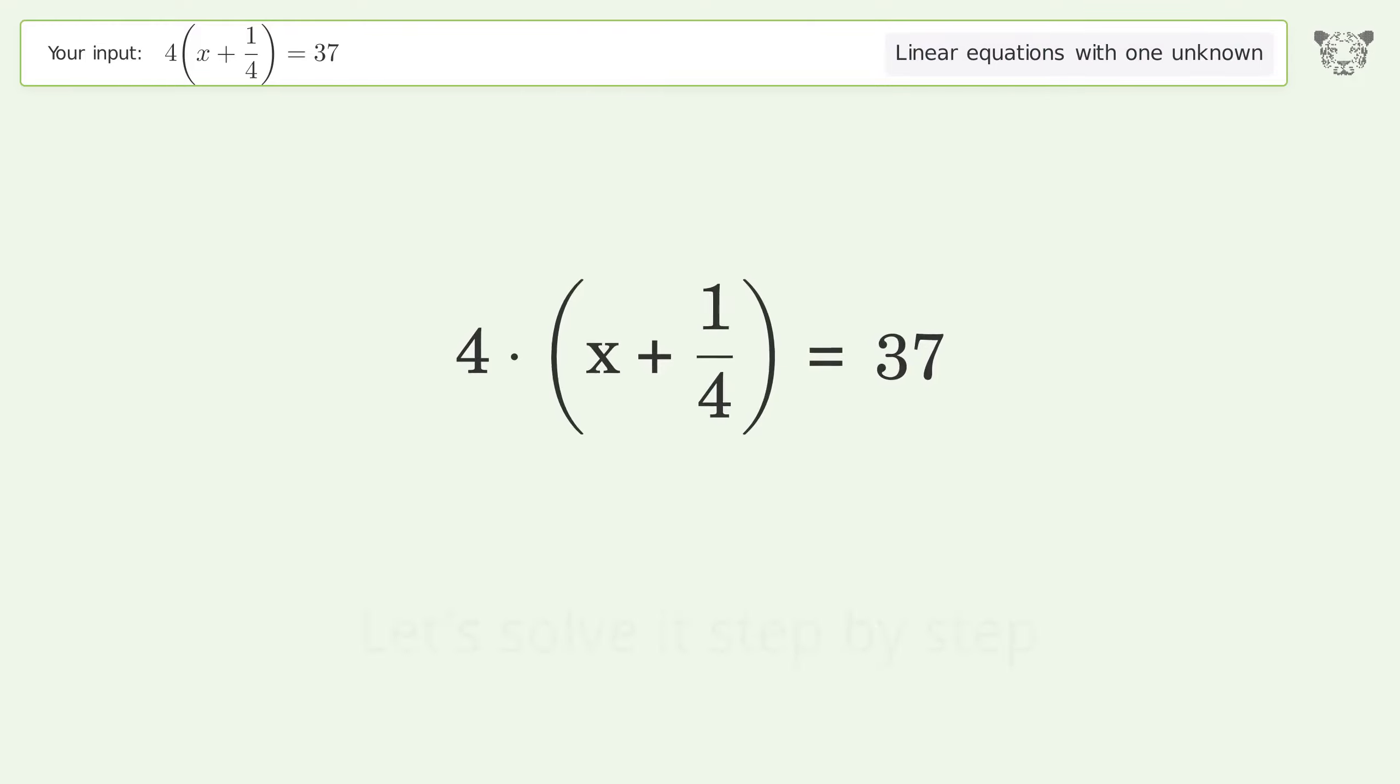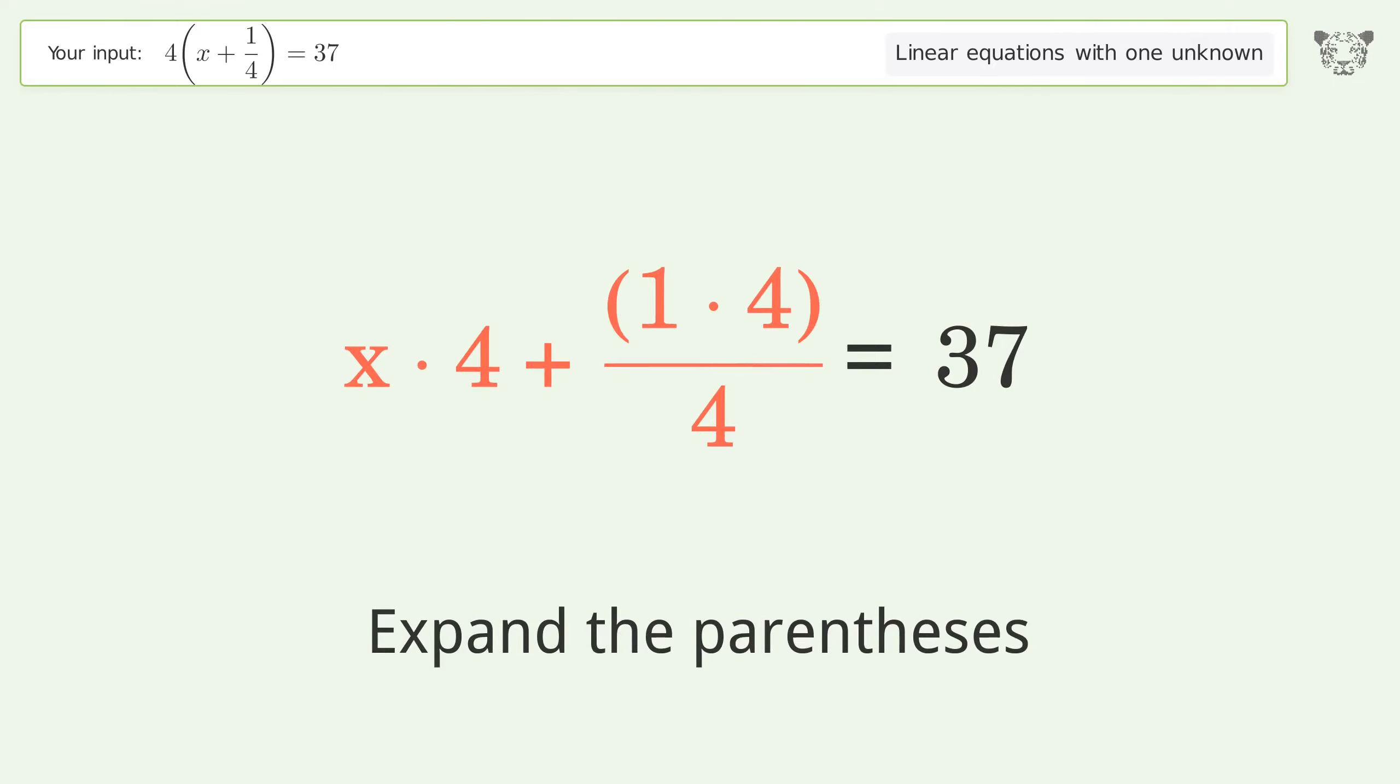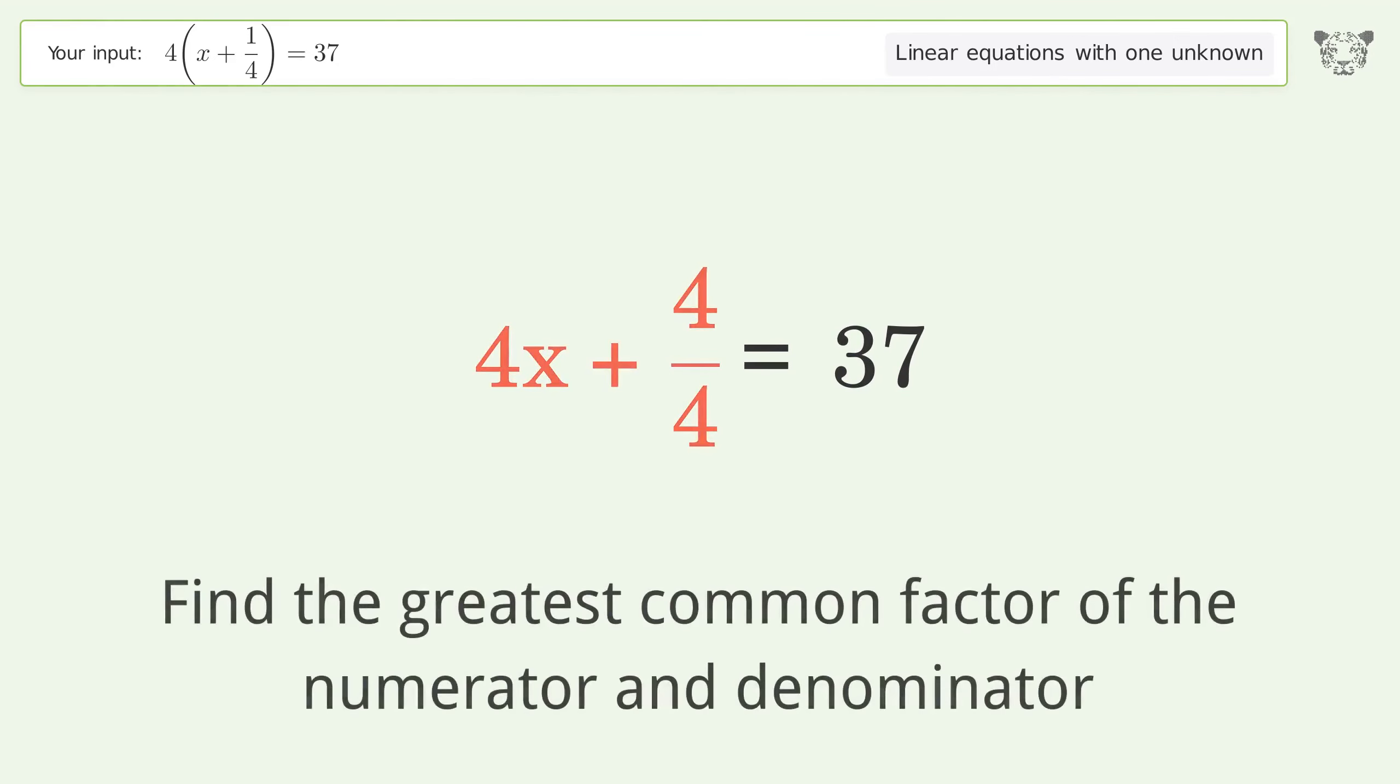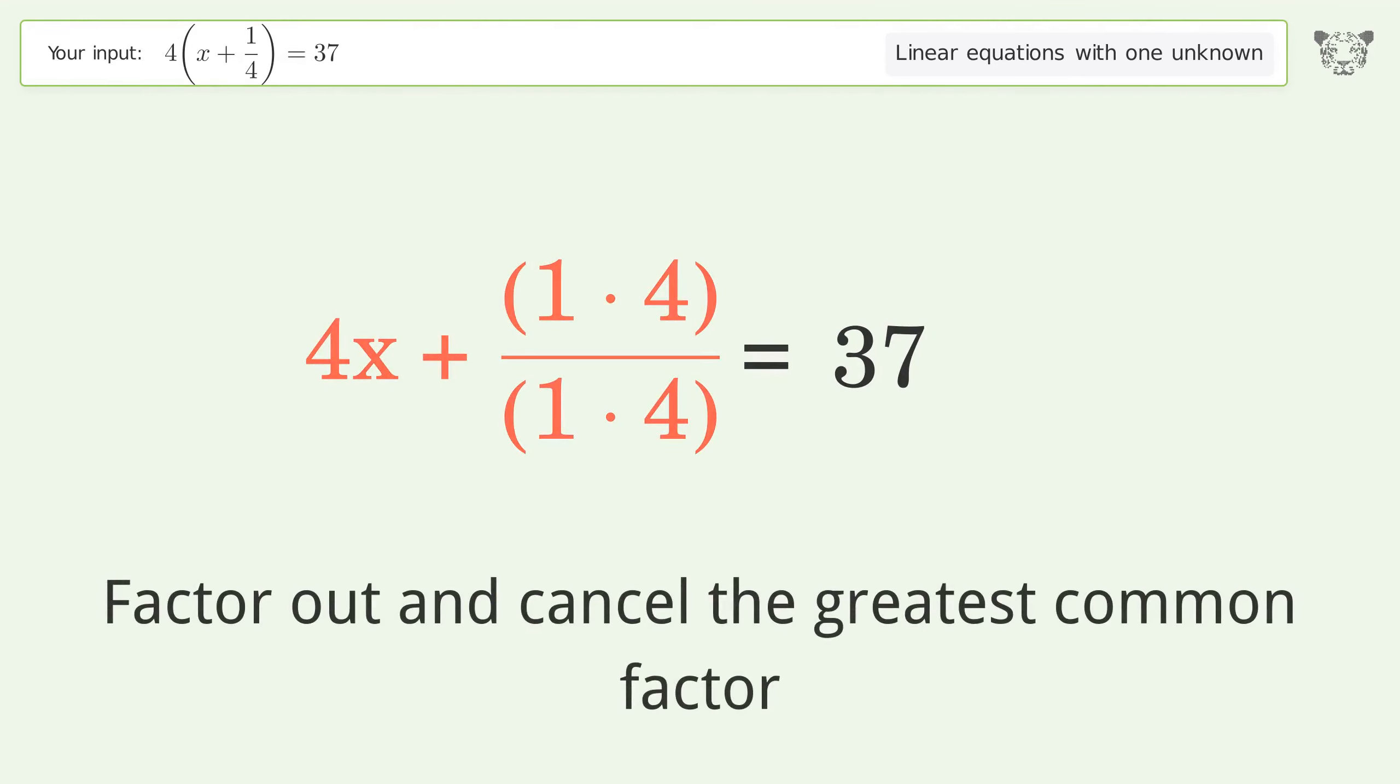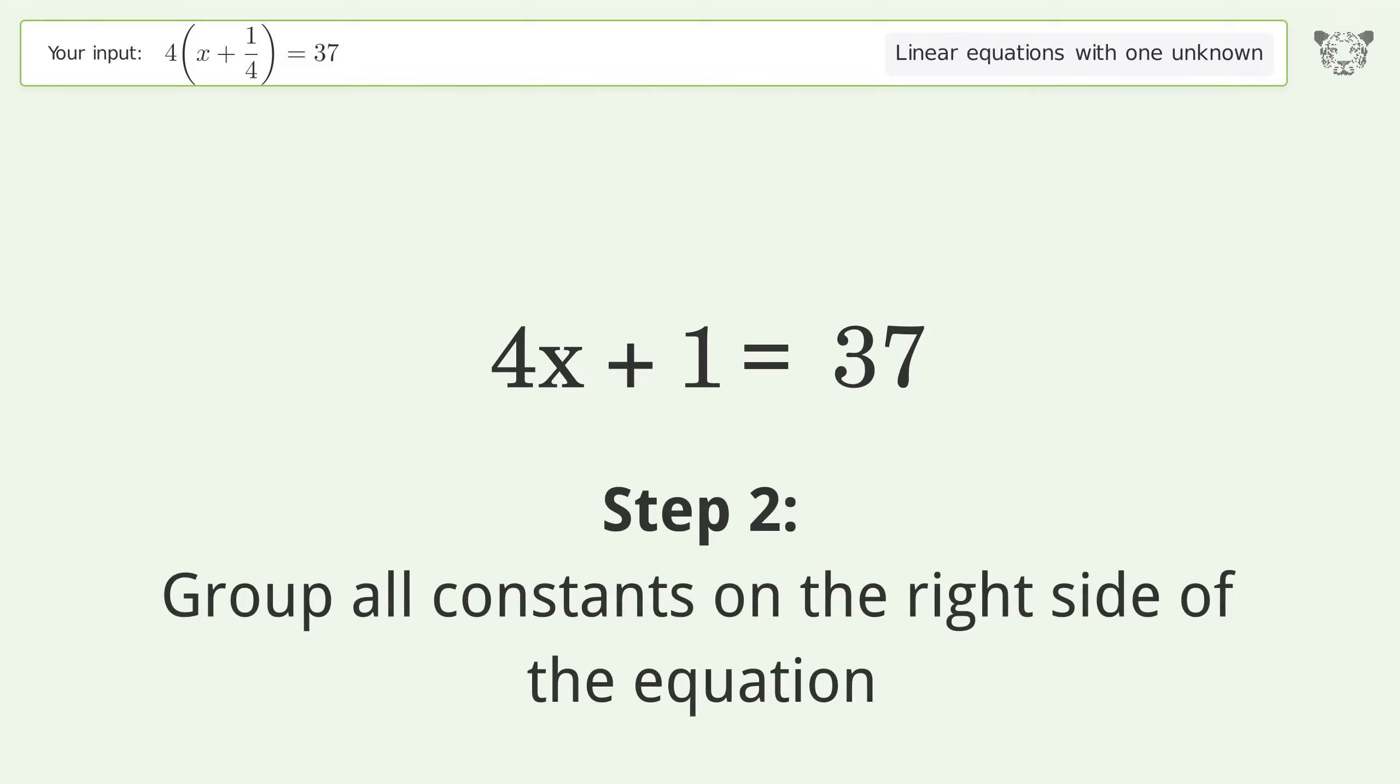Let's solve it step by step. Simplify the expression, expand the parentheses, simplify the arithmetic, find the greatest common factor of the numerator and denominator, factor out and cancel the greatest common factor, group all constants on the right side.